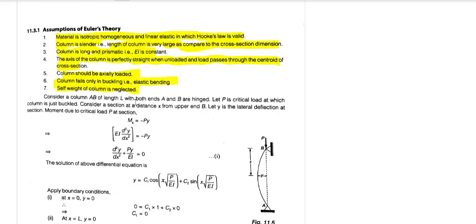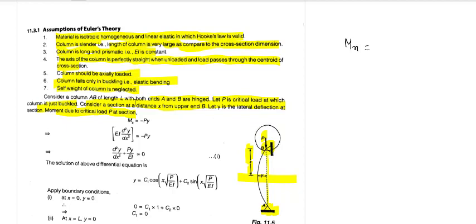Now Euler derived a formula. Consider a column AB of length L with both ends A and B pinned. Let P be the critical load at which the column just buckles. Consider a section at distance X from upper end B. Let Y be the lateral deflection at that section due to critical load. Taking moment: M equals P times Y — force into perpendicular distance.